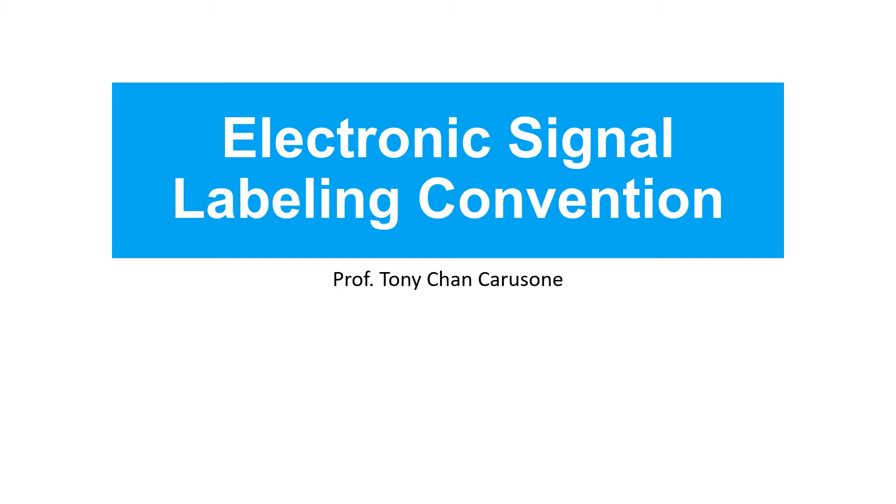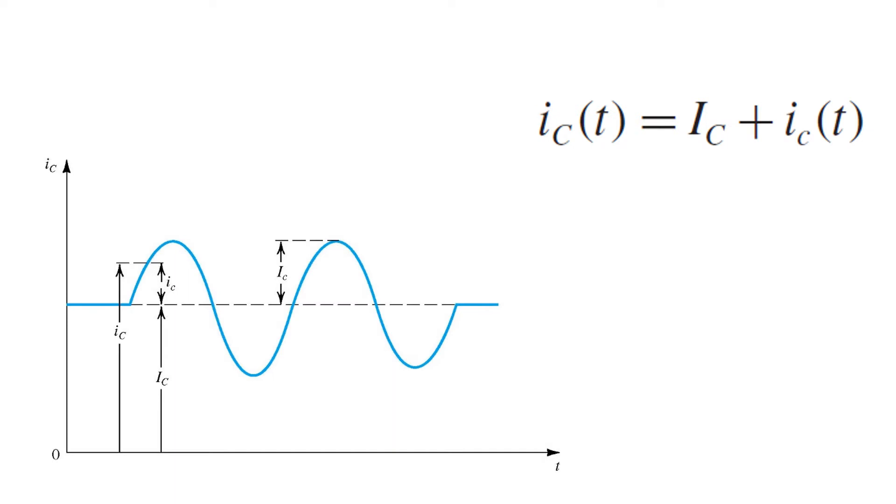In this video, we'll learn about the labeling conventions that we'll use for electronic signals. In general, our electronic signals will have a time-varying component that bears some information that we're interested in, and a component that doesn't vary with time.